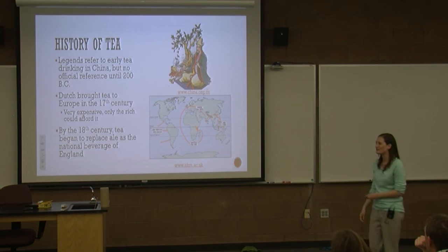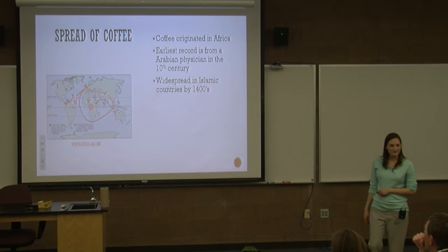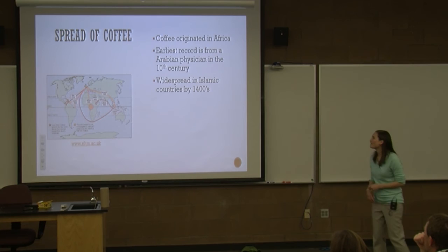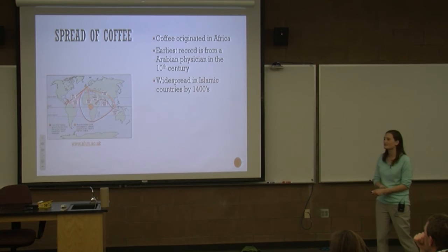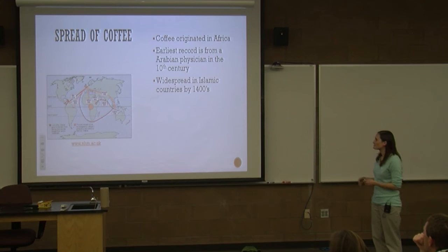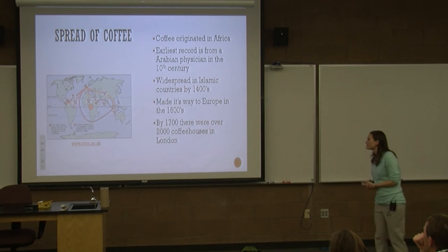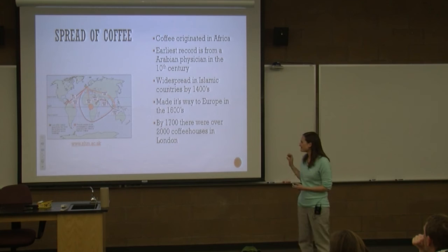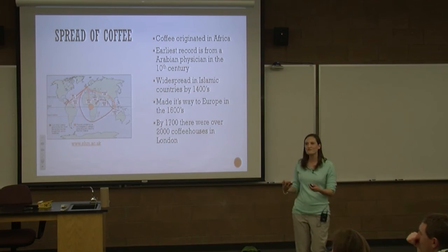Coffee originated in Africa and migrated its way up to the Arabian Peninsula. The earliest record is from an Arabian physician in the 10th century. These Islamic and Middle Eastern countries were drinking coffee for hundreds of years before it made its way to Europe — it didn't arrive there until the 1600s, and about 100 years later it was widespread. Notice this is about the same time frame as tea — they really arrived in Europe at about the same time, and people started getting addicted to caffeine. Coffee and tea helped the sobriety of Europe — before that, people were drinking beer, wine, breakfast, noon, and night. Now at least at breakfast they could have something different.